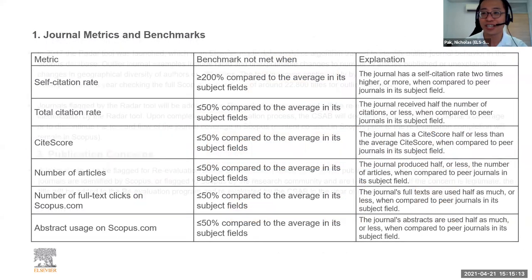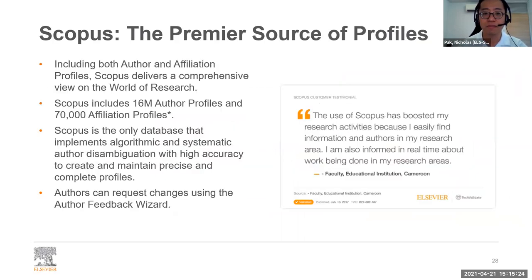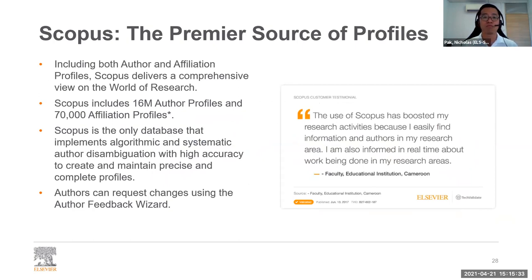Now that I've talked about the background on Scopus and how we constantly curate content and data, you probably want to know how author profiles on Scopus actually work. It's quite straightforward. Given the sheer volume of data through Scopus, we implement an algorithmic and systematic author disambiguation process with high accuracy to create and maintain precise and complete profiles. We've also recently implemented an author feedback wizard.